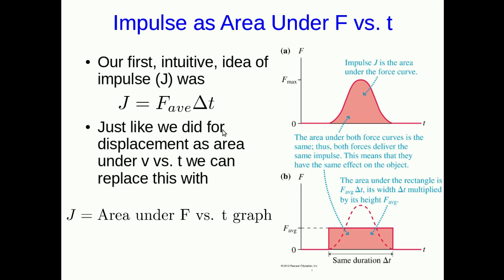Well, just as we did for displacement as an area under the velocity versus time graph, we can replace this idea with our impulse as an area under the force versus time graph. So if you have some complicated force versus time graph like this, it has some area under it, and that's equivalent to a rectangle with a height of F_average and the same duration. And because those have the same area, they're the same impulse, and they'll have the same effect on the object.